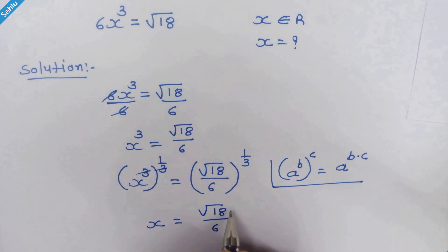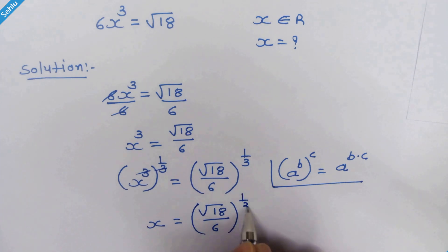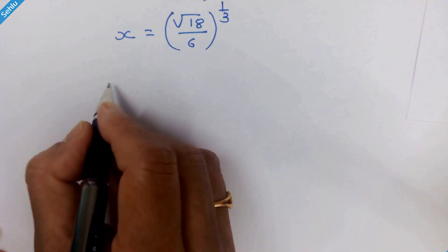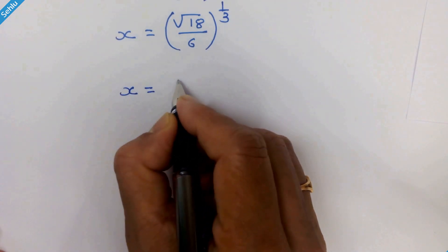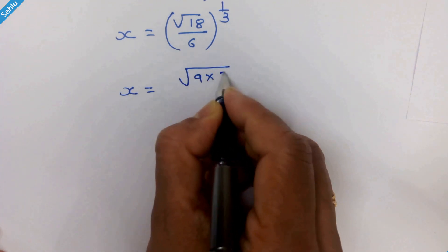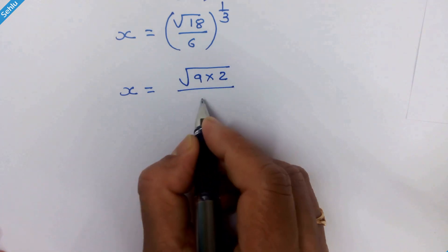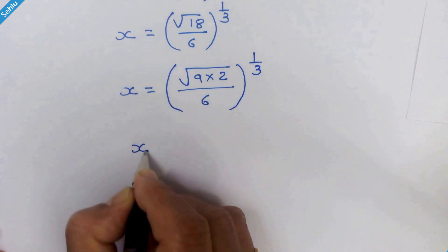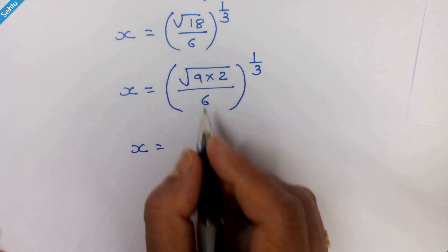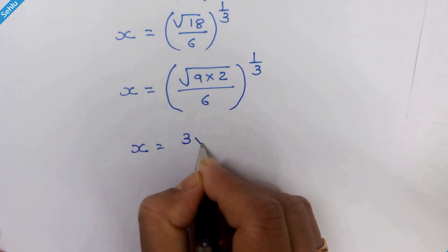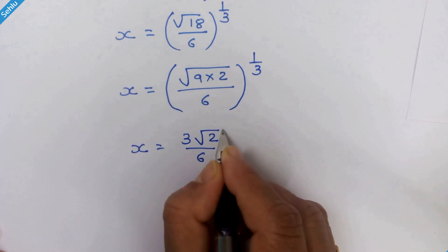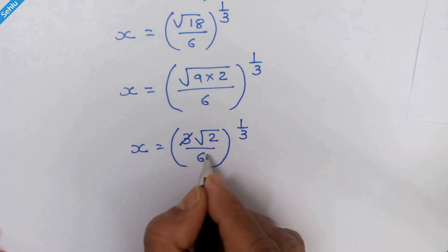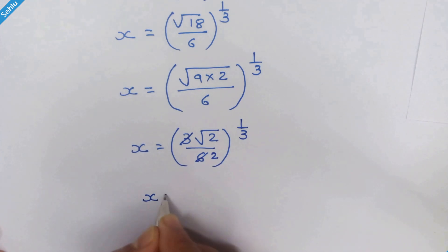Now we have x = (√18 / 6) raised to 1/3. Let's simplify the right-hand side. We can write 18 as 9 × 2, so √18 = √9 × √2 = 3√2. Therefore, we have x = (3√2 / 6) raised to 1/3. Since 3 divides into 6 twice, this simplifies.